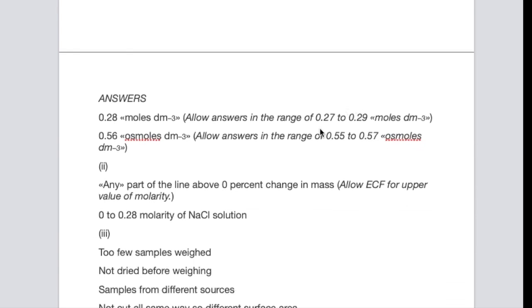You will see that the range for number 1 is 0.27 to 0.29, deliberately not giving any credit for 0.30, which is obviously not the concentration. The answer is also given in osmoles, which is double the molarity.